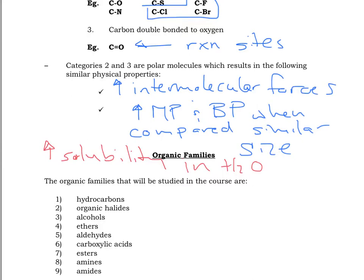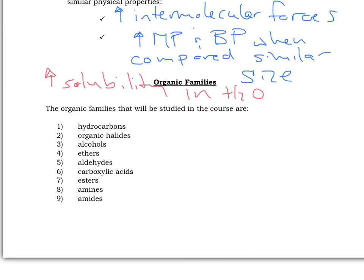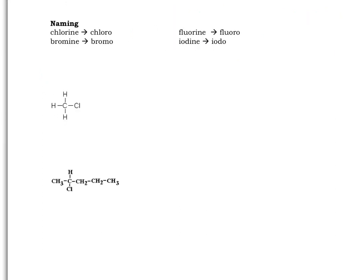The organic compounds that we're going to look at or organic families that we're going to look at in the course are listed here. We'll talk more about those in future classes. The naming of halogenated hydrocarbons we've already gone over. I'll just give you a second to quickly jot down your names for these two and see how you do. Just pause your playback for a moment.